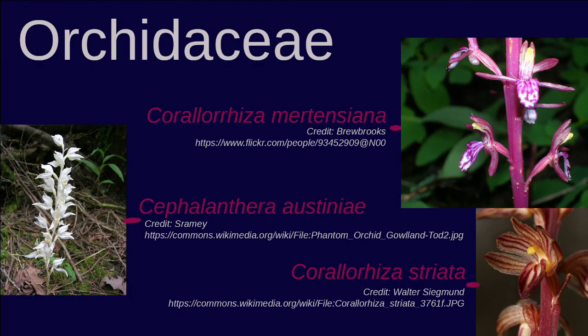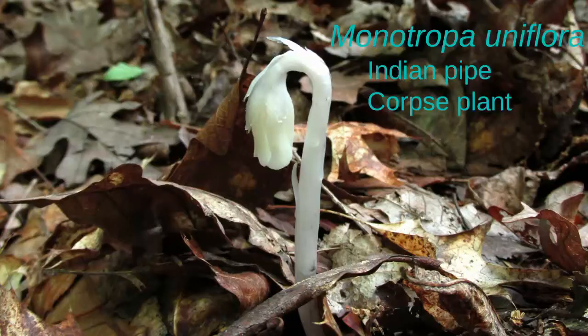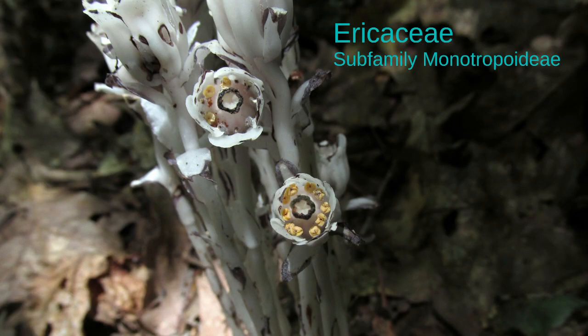Orchidaceae, the orchid family, has the largest number of mycoheterotrophic genera of any plant family, making up around 35% of fully mycoheterotrophic species. The species I am most familiar with in the eastern United States is Monotropa uniflora, which is in the blueberry family Ericaceae. Within Ericaceae, there is a subfamily, Monotropoideae, entirely comprised of non-photosynthesizing mycoheterotrophs.